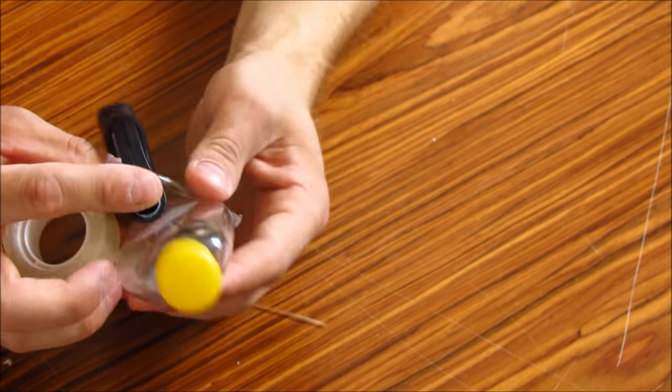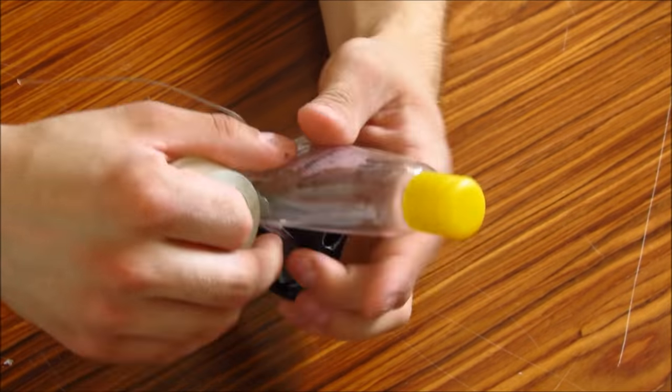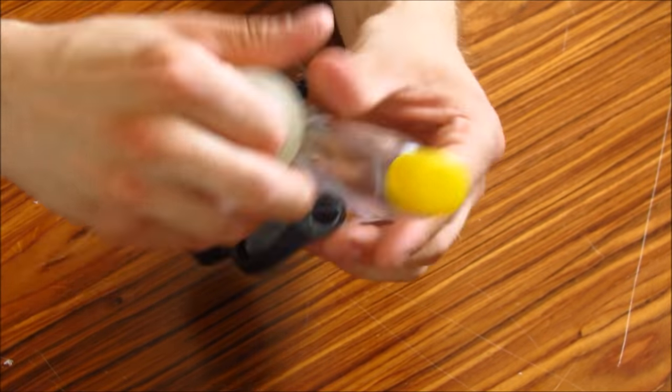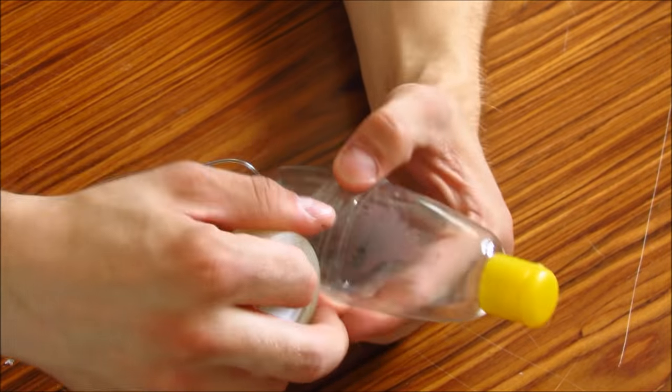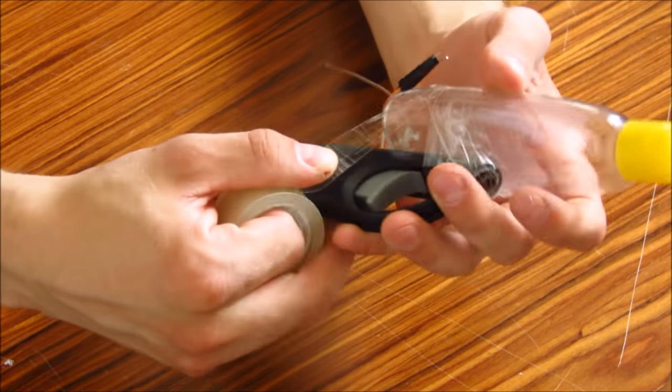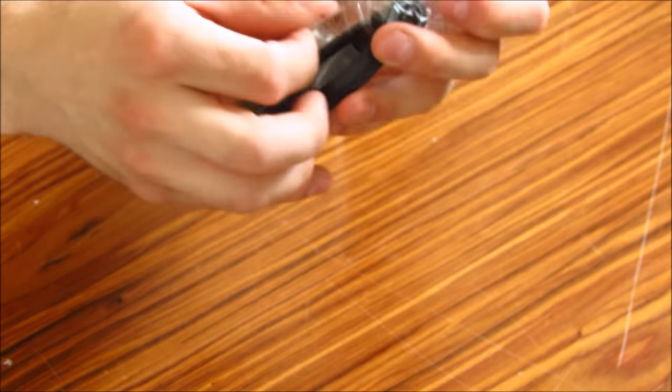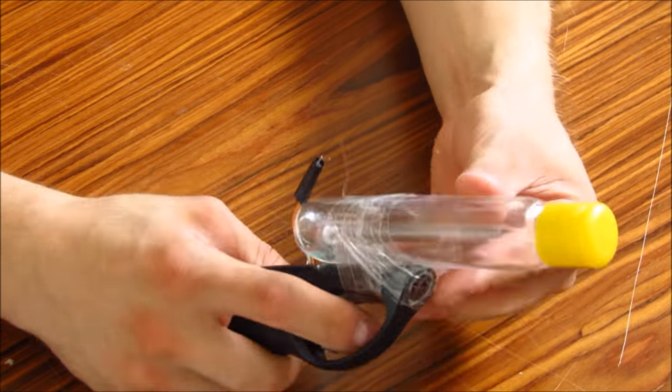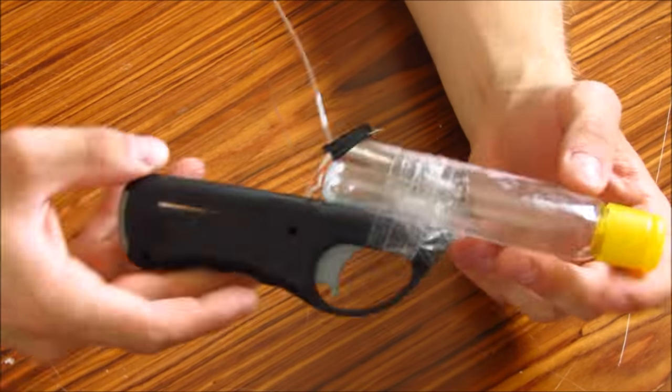Next, I taped the bottle to the barbecue lighter using clear tape because you don't need anything super strong to hold it together. But if you want to, you can obviously put some hot glue as well just to make sure.